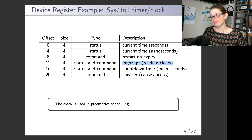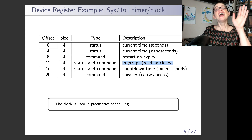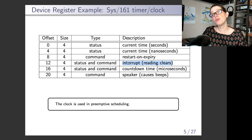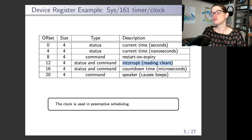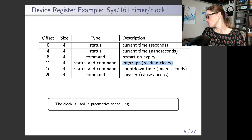Once the countdown has completed, we may also want to tell the device we've seen the completion, so we clear the interrupt or acknowledge to the device that we've seen it finish its task. There's also a command register called restart on expiry. Instead of manually restarting a countdown every time the interrupt fires, if you write to restart on expiry, when the countdown completes the clock will automatically start a new countdown. Hence you can implement things like timesharing and preemption — you can say every 10 milliseconds fire an interrupt and the clock will just do it forever.